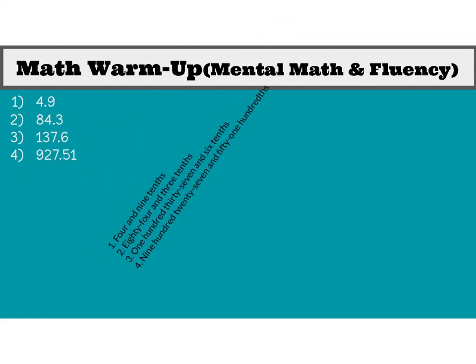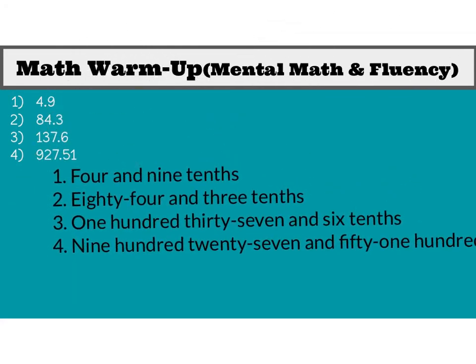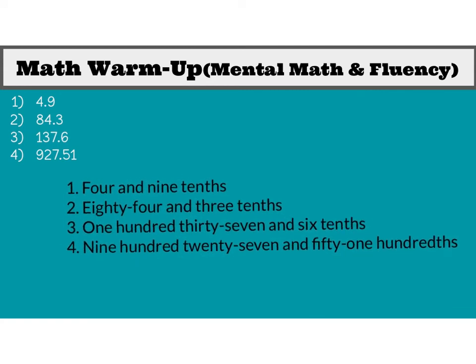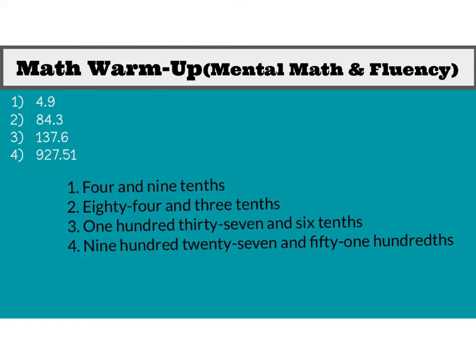So let's take a look — how did you do? Number one, you should have written four and nine-tenths in word form. Double-check your spelling. Make sure that you've got the THS at the end of tenths. Number two, eighty-four and three-tenths.